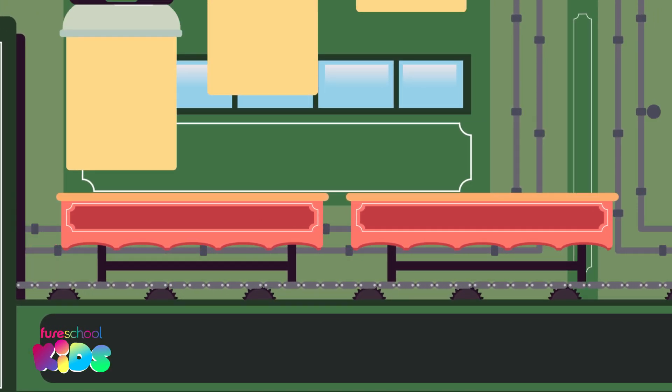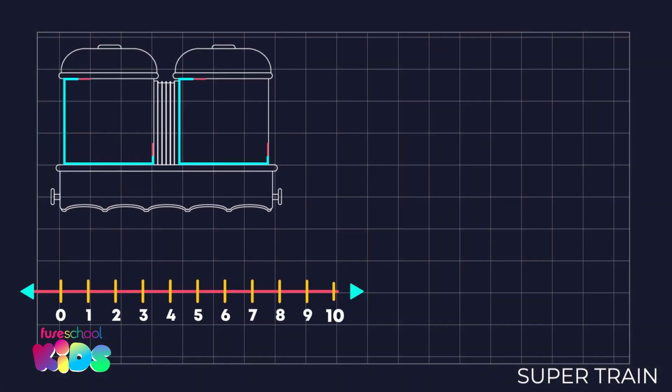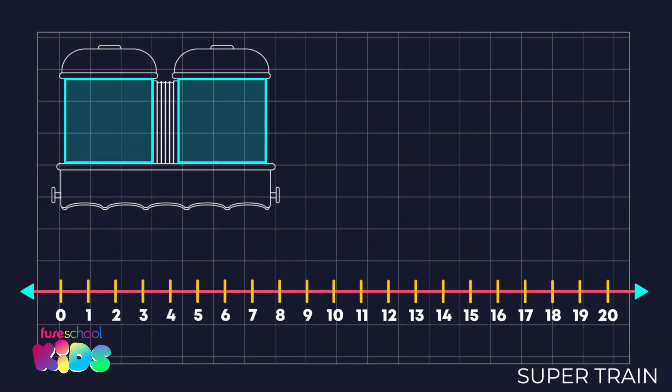Our super train needs carts. The carts come in pairs of two. When we count in twos, we skip every other number, like this.